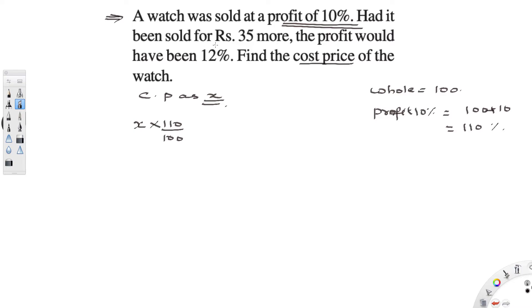The next line. Had it been sold for Rs 35 more. So if I add Rs 35 more to it, the profit would have been 12%.